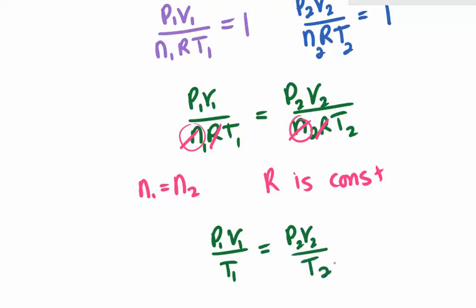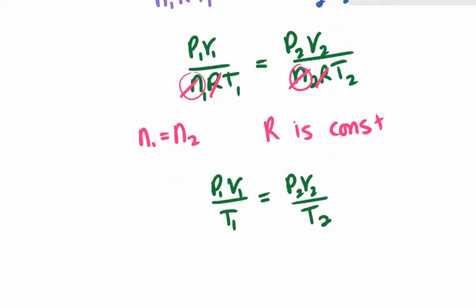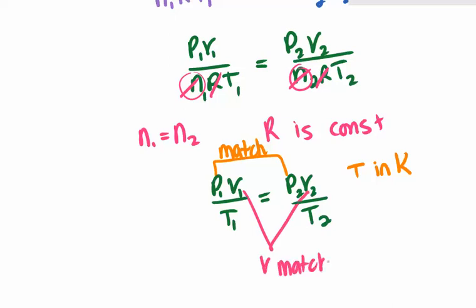And there we have it. There's the combined gas law. Remember on this equation, temperature must be in Kelvin, but the units for pressure and the units you use for volume just need to match each other.